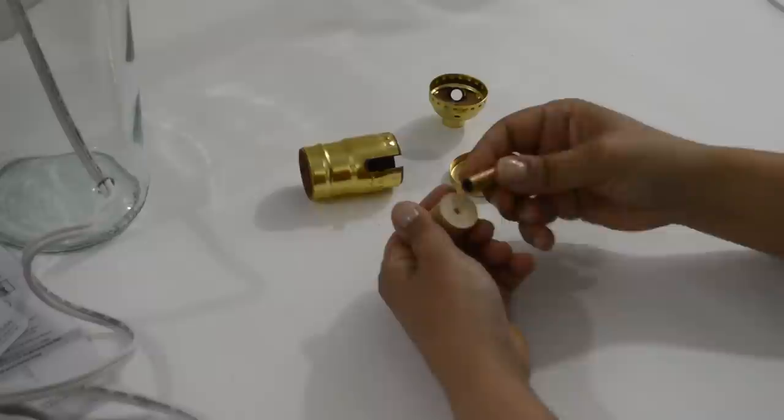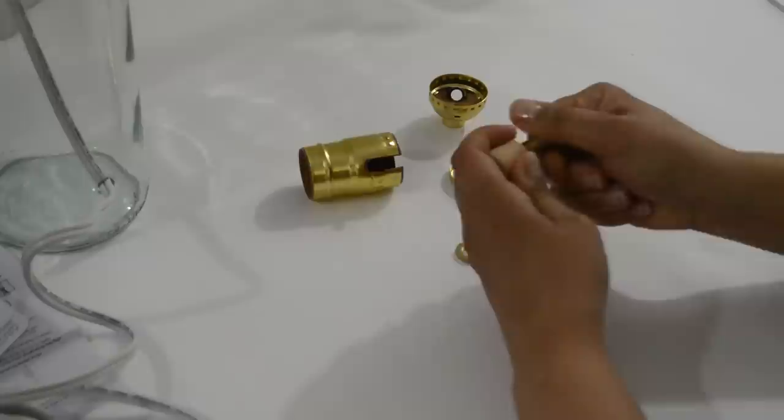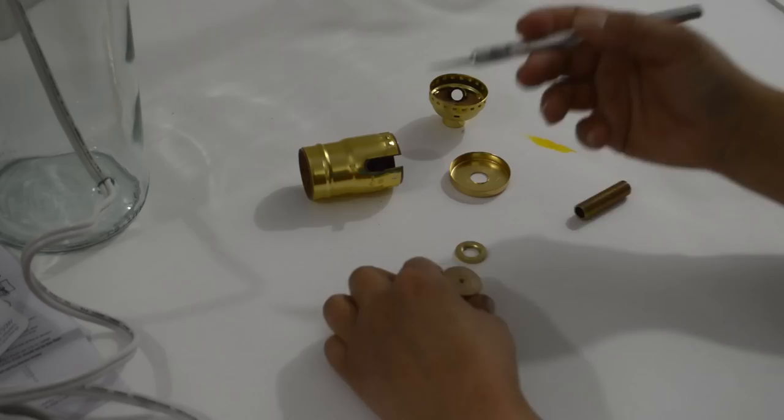I took the lamp nipple and made an imprint on the top of the cork with it. Using my X-Acto knife, I hollowed out a hole all the way through. If you do this, make sure not to make the hole too big. You want the lamp nipple to fit snugly into the cork.